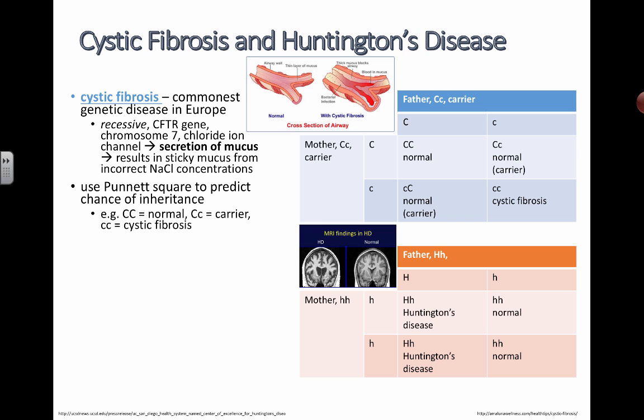There are three possible genotypes here. Big C, big C is normal. Big C, little c — heterozygous or a carrier — shows the normal trait and isn't actually affected by the disease, but has the potential to pass this on through sperm or egg cells. And then if you're little c, little c — homozygous recessive — you actually have cystic fibrosis. So that's what cystic fibrosis is all about.